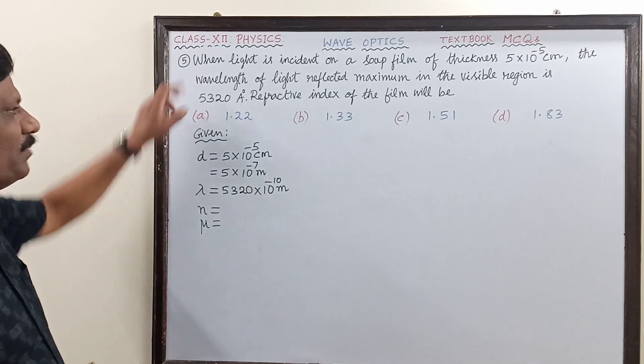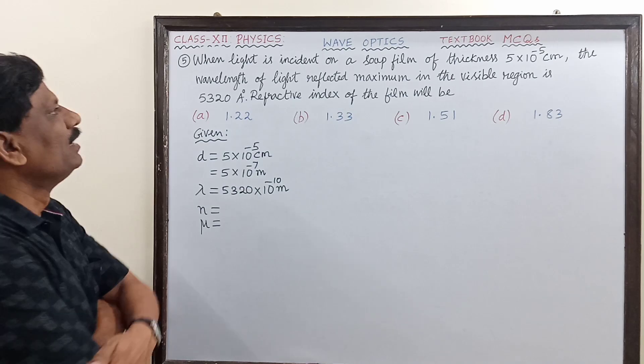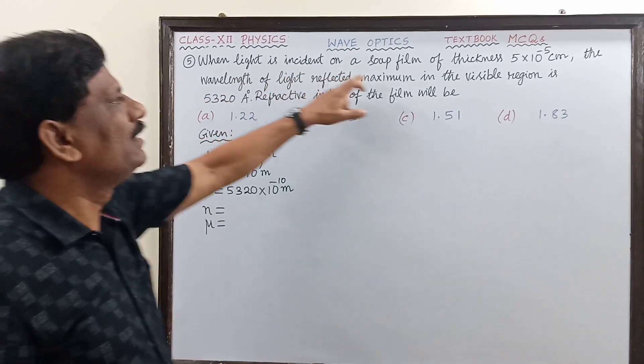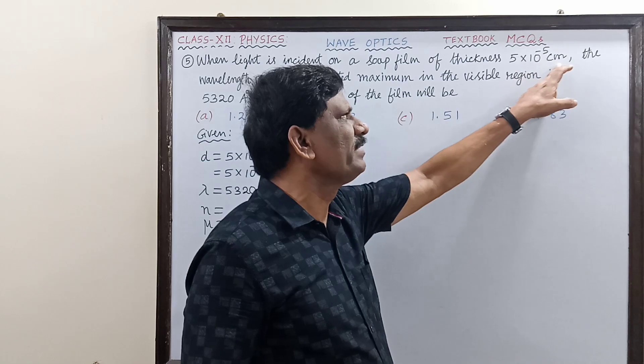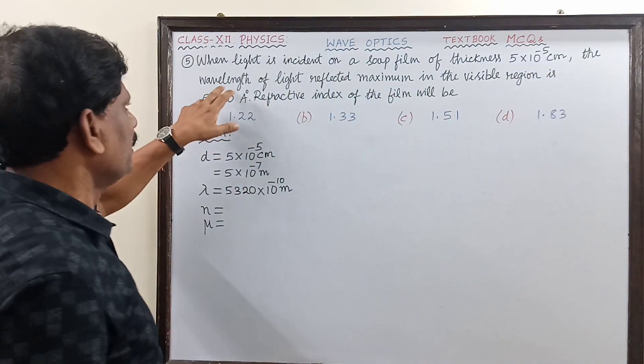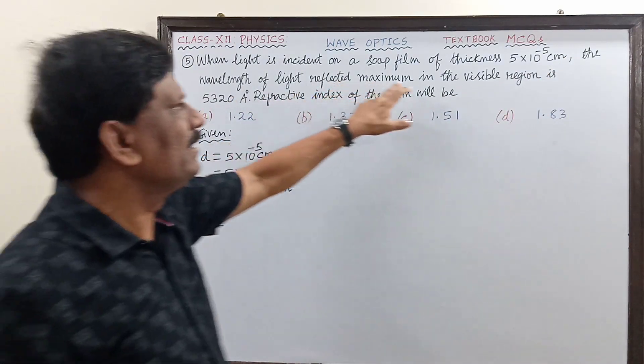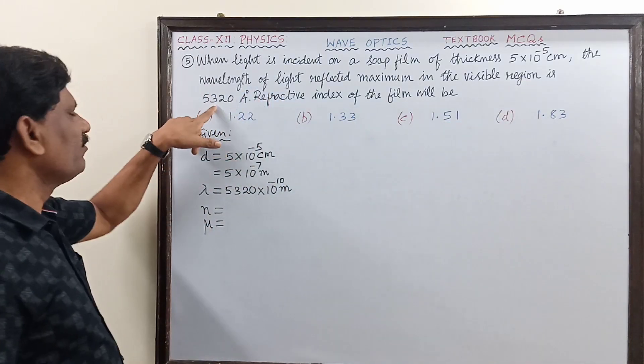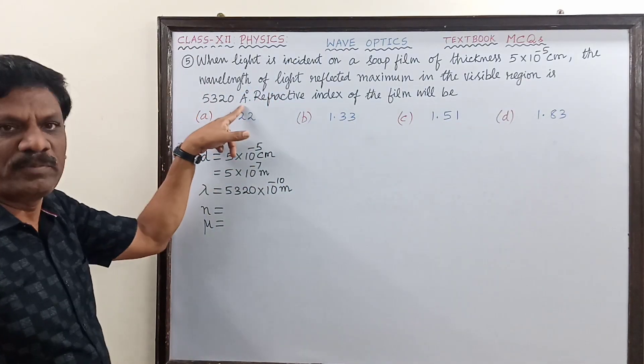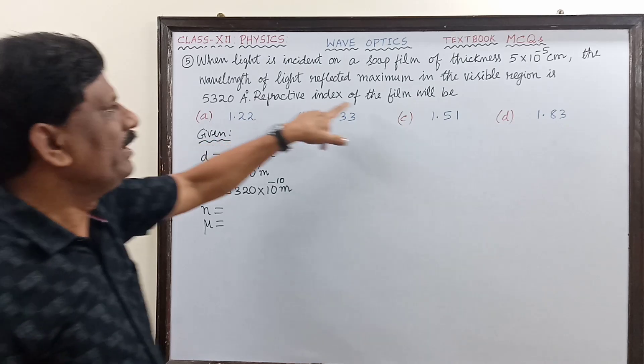Hi students, MCQ number 5: When light is incident on a soap film of thickness 5×10⁻⁵ centimeter, the wavelength of light reflected maximum in the visible region is 5320 angstrom units. The refractive index of the film will be - we have to find out.